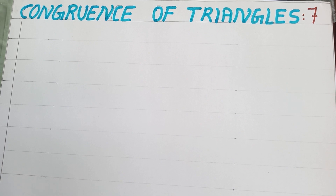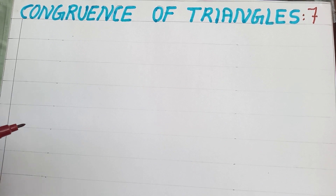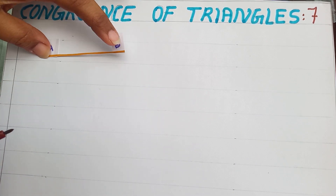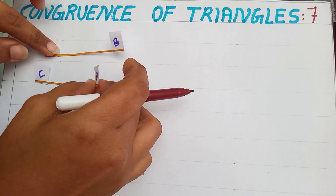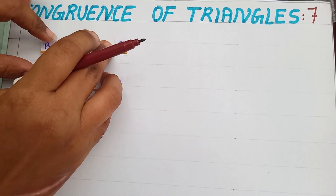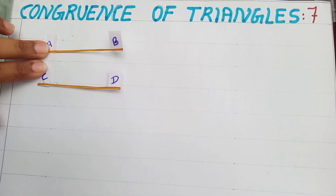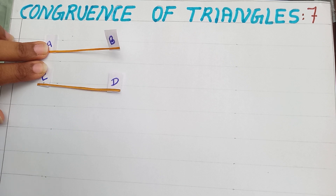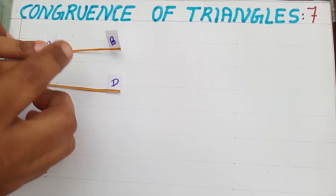For that, we have to take two line segments, line segment AB and line segment CD. I have brought two line segments, line segment AB and line segment CD. For finding whether these two lines are congruent, we have to keep one line over the other.